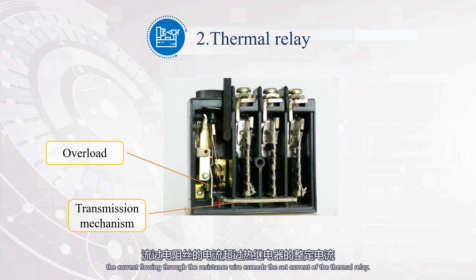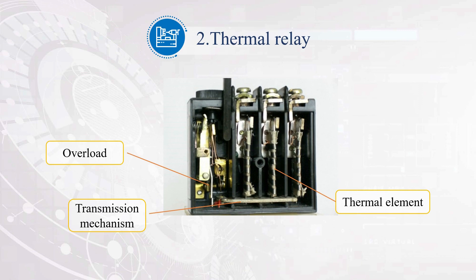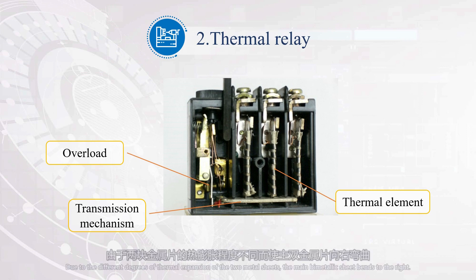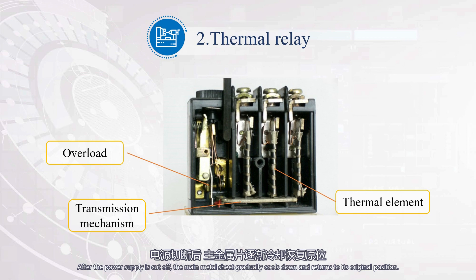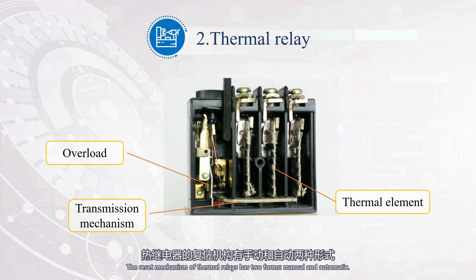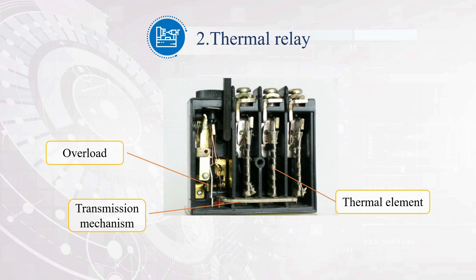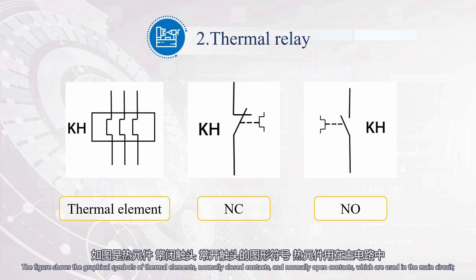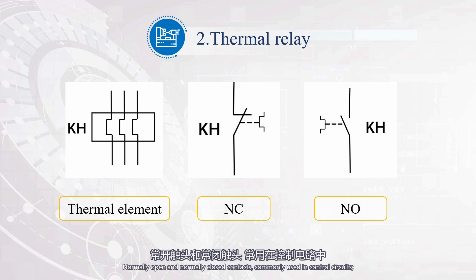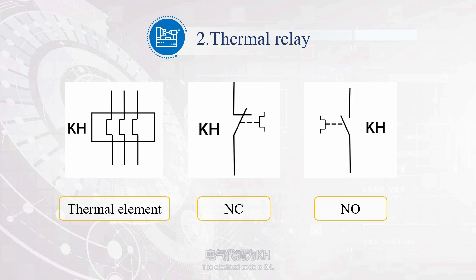When the motor is overloaded, the current flowing through the resistance wire exceeds the set current of the thermal relay. The heat increases and temperature rises. Due to the different degrees of thermal expansion of the two metal sheets, the main bimetallic sheet bends to the right. The transmission mechanism pushes the normally closed contact to disconnect, breaking the control circuit and cutting off the main circuit through the contactor to achieve overload protection. After the power supply is cut off, the bimetallic sheet gradually cools and returns to its original position. The reset mechanism has two forms: manual and automatic. The electrical code is KH.